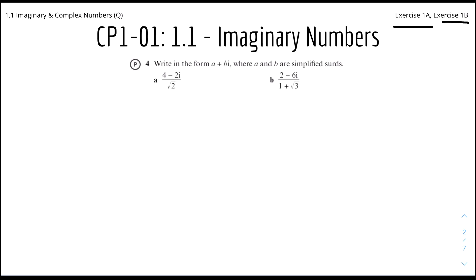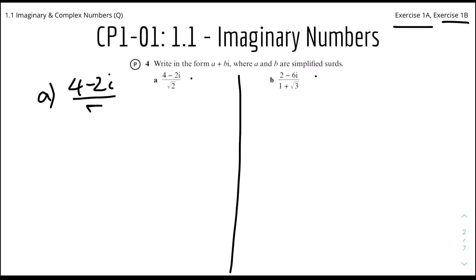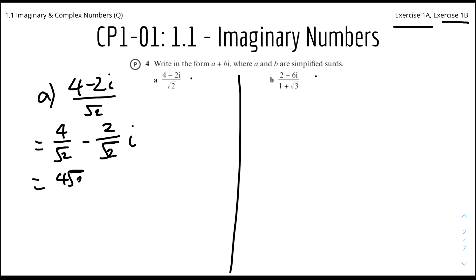Write in the form A plus Bi where A and B are simplified. So let's split into half. Part A on the left: it will be (4 minus 2i) over root 2. Just like normal fractions, we can split into two fractions to be 4 over root 2 minus 2 over root 2 times i. We can rationalize the denominator by multiplying top and bottom by root 2. So 4 over root 2 would be 4 root 2 over 2, which equals 2.